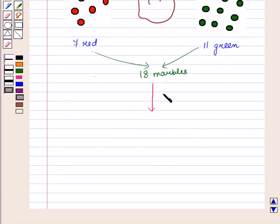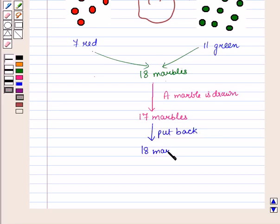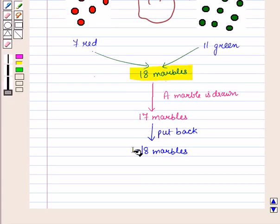Now if a marble is drawn at random, then there will be seventeen marbles. And this marble is put back in the bag. Then again there will be eighteen marbles. So here the number of marbles remain same.